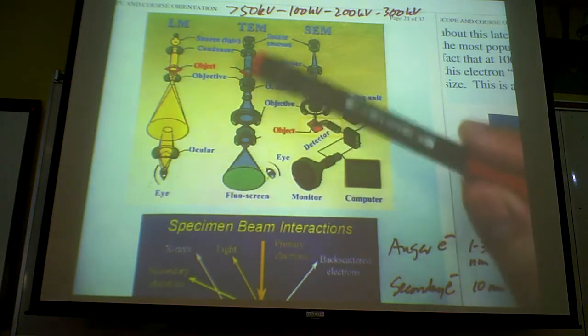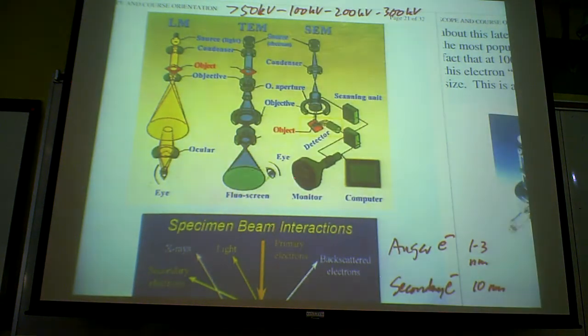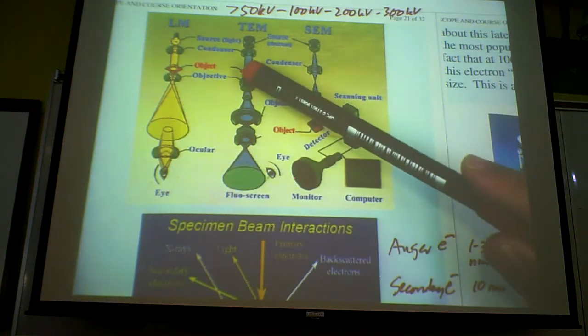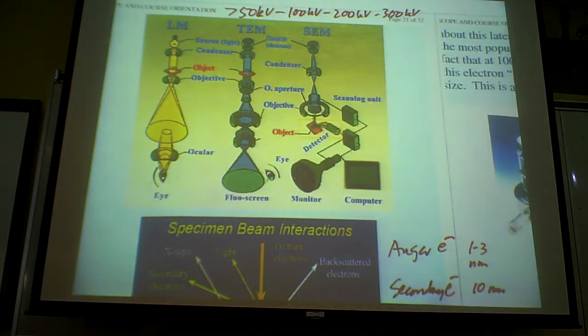So because in the case of the transmission electron microscope, you are sending the electron beam through the specimen, it means that you are detecting a column of atoms. So when people read the literature, some of you may read the literature and you see all this very beautiful so-called TEM picture, and you see individual atoms, you have to keep in mind that you're not seeing individual atoms.